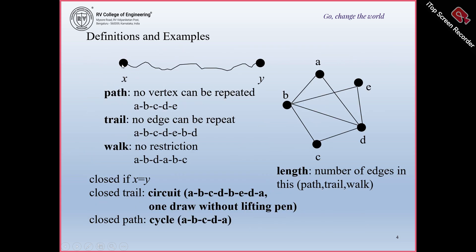Next is the path. Suppose I start from X and reach Y, involving no vertex repetition — such a path is called a path. For example, consider this graph with vertices A, B, C, D, E. We call A to E a path where there is no repetition of vertices.